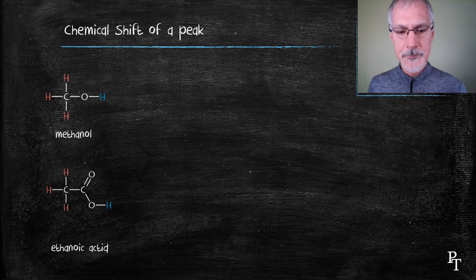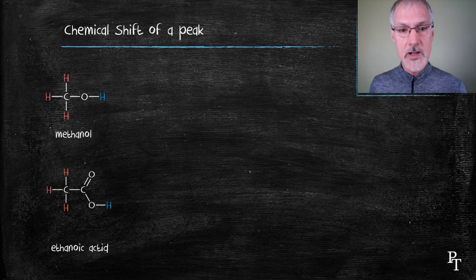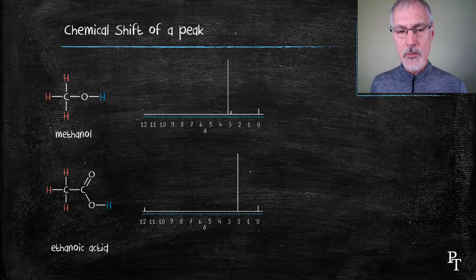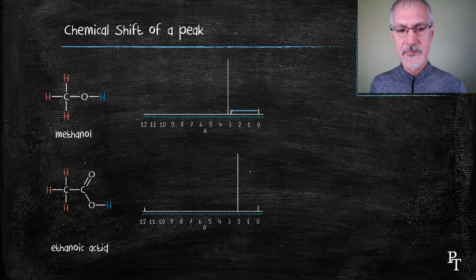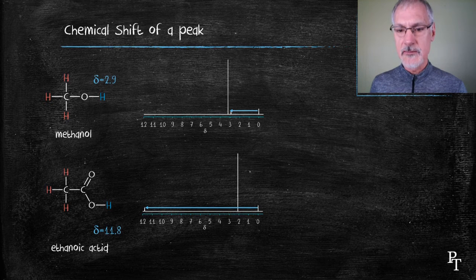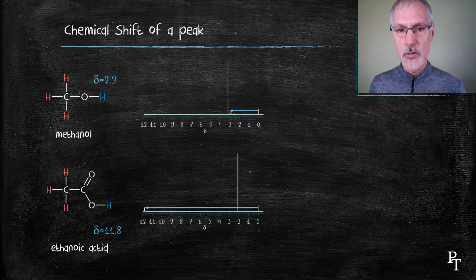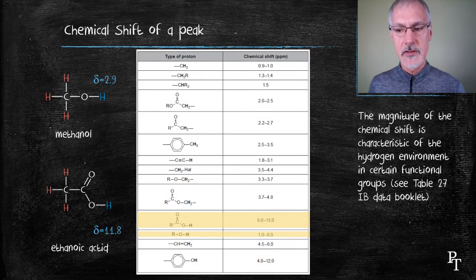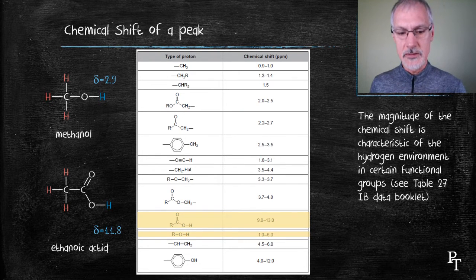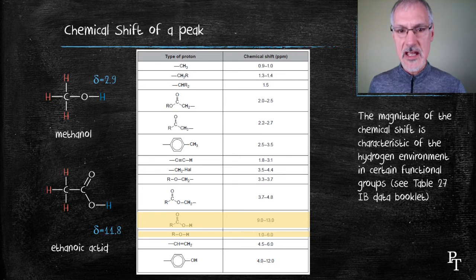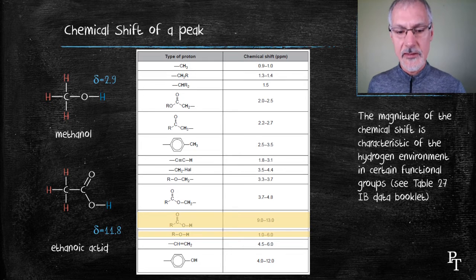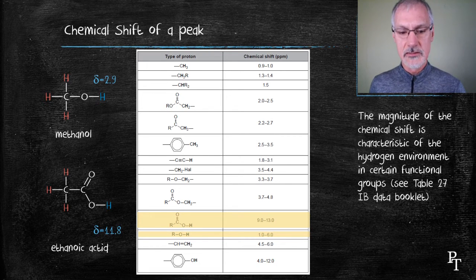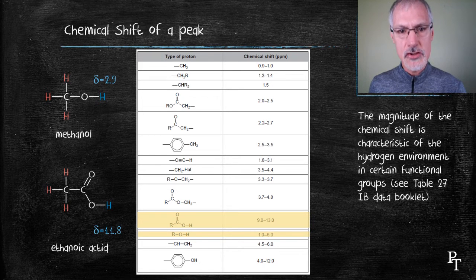Lastly, I want to look at what's called the chemical shift. Here I have two molecules. Both of them have two hydrogen environments. Both of them have the same ratio of hydrogens in each of those environments. I want to focus in particular on the hydrogens that I've shown here in blue. In the first molecule, that one peak is located at about 2.9, and in the second peak, that single hydrogen exists at about 11.8. That's called the chemical shift. By consulting my IB data booklet, those chemical shifts correspond to certain functional groups. Here I've identified them in the IB data booklet. The shift at 2.9 corresponds to the H that's present in an alcohol, which can shift anywhere between 1 and 6. The shift at 11.8 corresponds to the hydrogen that exists in a carboxylic acid. As you can see, its range is 9 to 13. So the chemical shift gives me some idea of the functional group of that particular hydrogen.